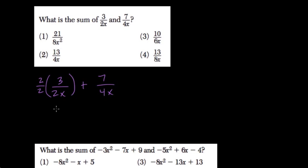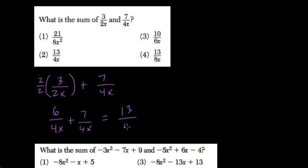That gives me 6 over 4x plus 7 over 4x, and of course that's 13 over 4x, which is our answer.